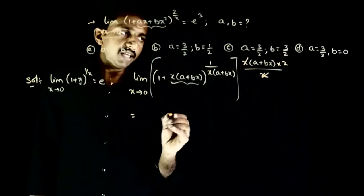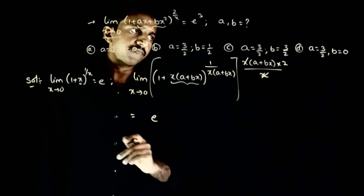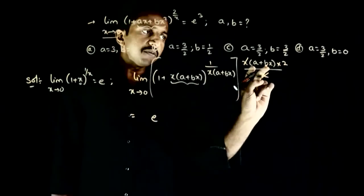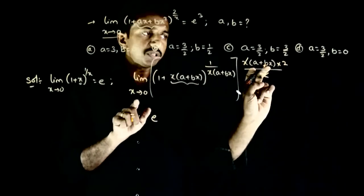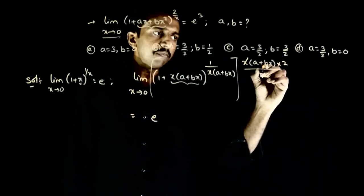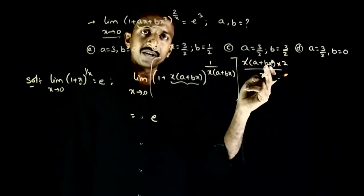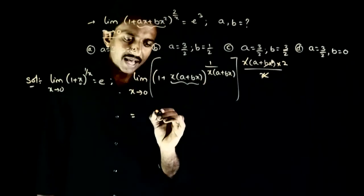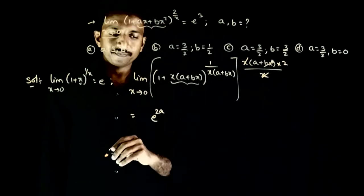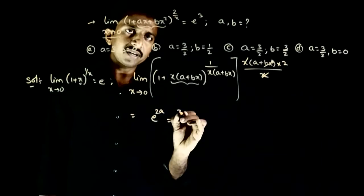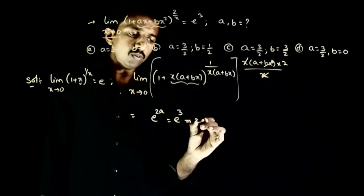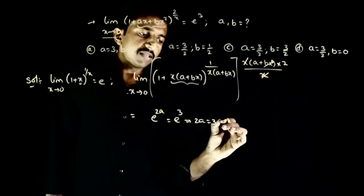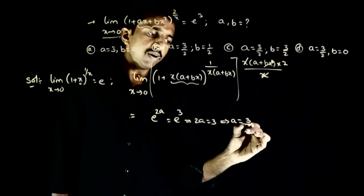So the value of limit is e power. Aap deek sakte hai Yaha x tending to 0 If you put x equal to 0 b doesn't really matter. Whatever the value of b is, bx is always tending to 0. So the value of limit is e power 2a. And this is given as e power 3. This implies 2a is equal to 3. This implies a equal to 3 by 2.